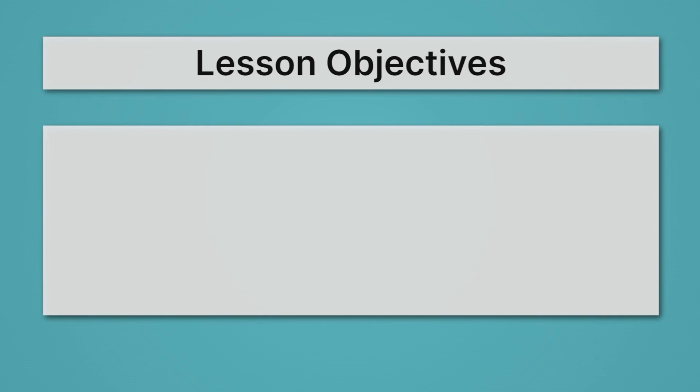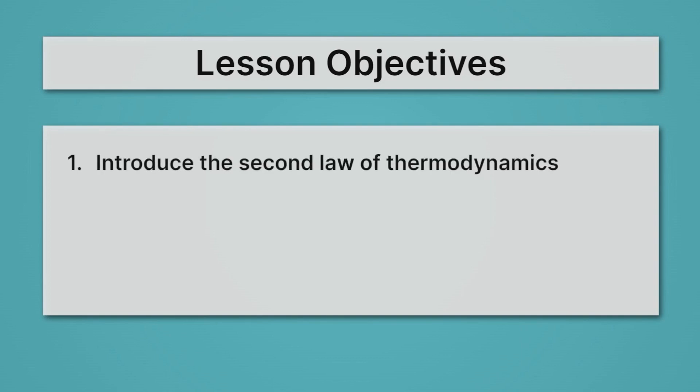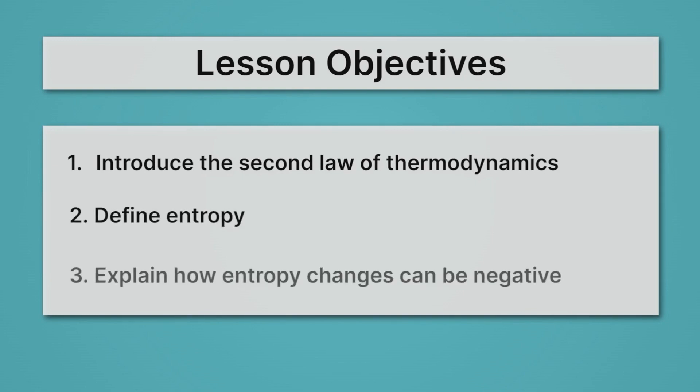Let's begin by reviewing our lesson objectives. First, we'll introduce the second law of thermodynamics. Then we'll define entropy. And lastly, we'll explain how entropy changes can be negative.